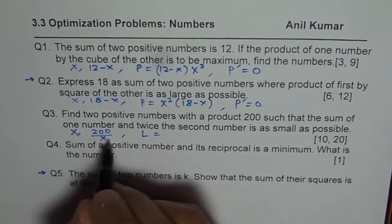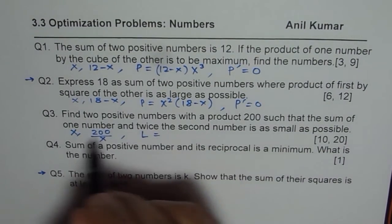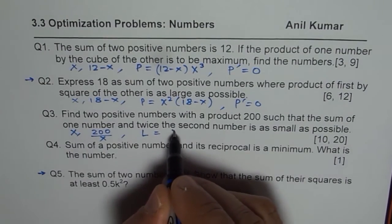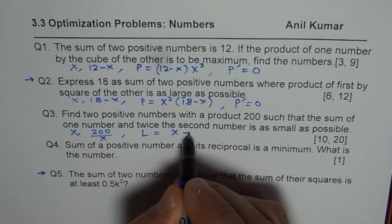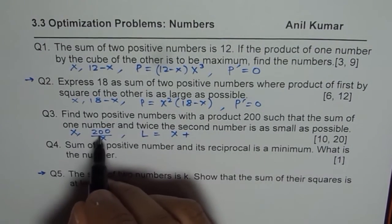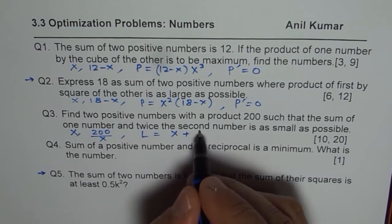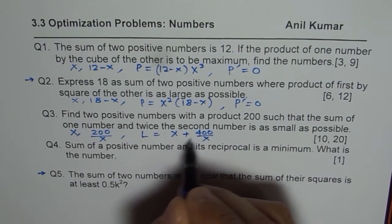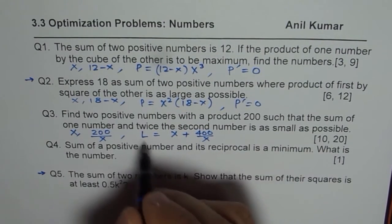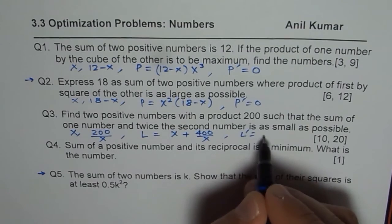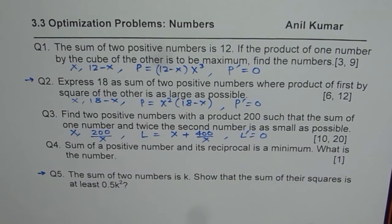You have to sum them up: one is x, plus twice the other, which is 2 × (200/x) = 400/x. So L = x + 400/x, which is to be minimized. Find the derivative, equate it to zero, and get the answer.